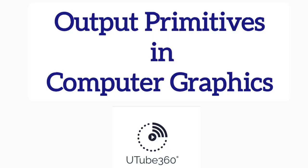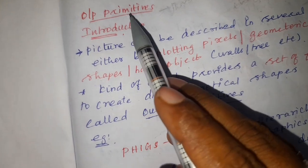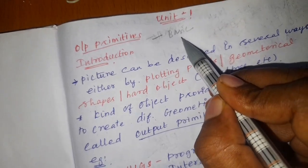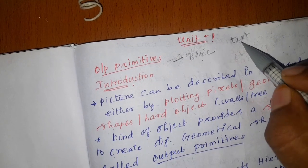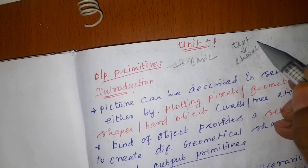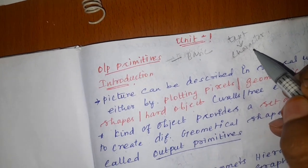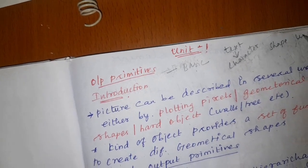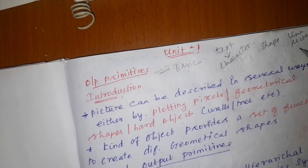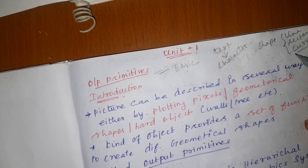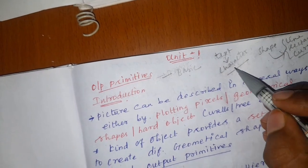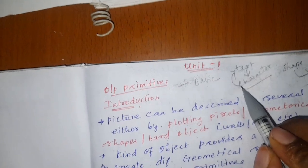Welcome to the new section of computer graphics. Today we will learn about output primitives. A primitive is a basic element. If you need to display text, you need characters. If you need to draw shapes, you need a line, rectangle, curve, or other shapes. These are the basic elements used to draw a shape, so a primitive is known as a basic element.